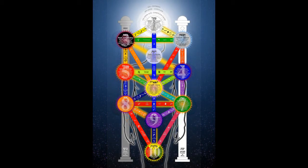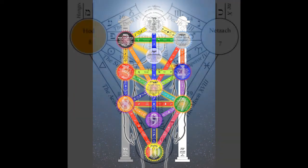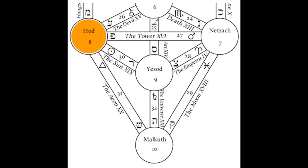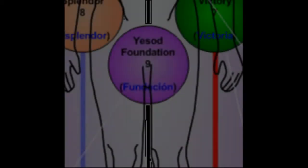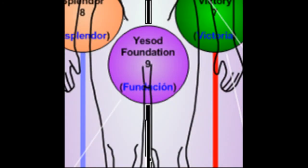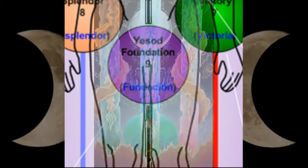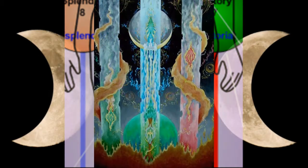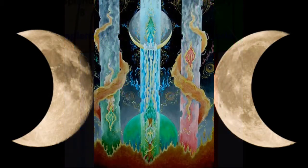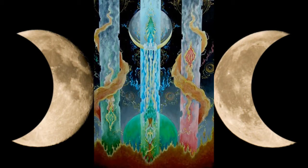For example, the path between Hod and Yesod would be the path between the rational intellect — in astrology governed by Mercury — and Yesod, the moon, the feeling, the body, the foundation, or the machinery of the universe as it's called in the Kabbalah.